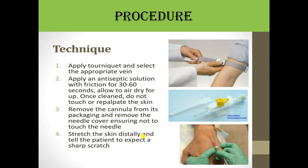To start the procedure, first apply the tourniquet and select an appropriate site. The tourniquet is a constricting or compressing device used to control venous and arterial circulation to an extremity for a period of time. Then apply an antiseptic solution with friction for 30 to 60 seconds. Allow it to air dry, and once cleaned, do not touch or re-palpate the skin. Remove the cannula from its packing and remove the needle cover, ensuring not to touch the needle.